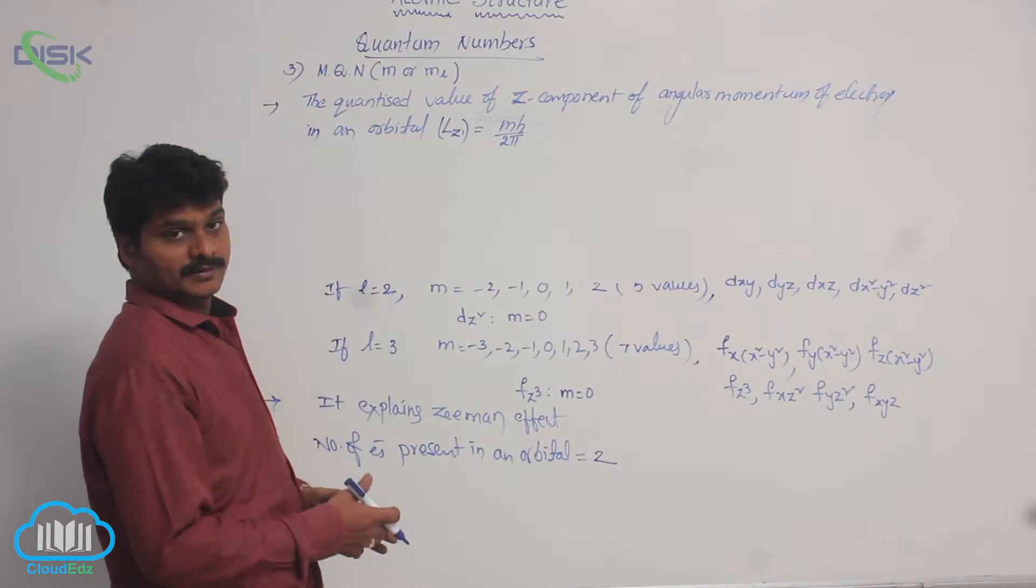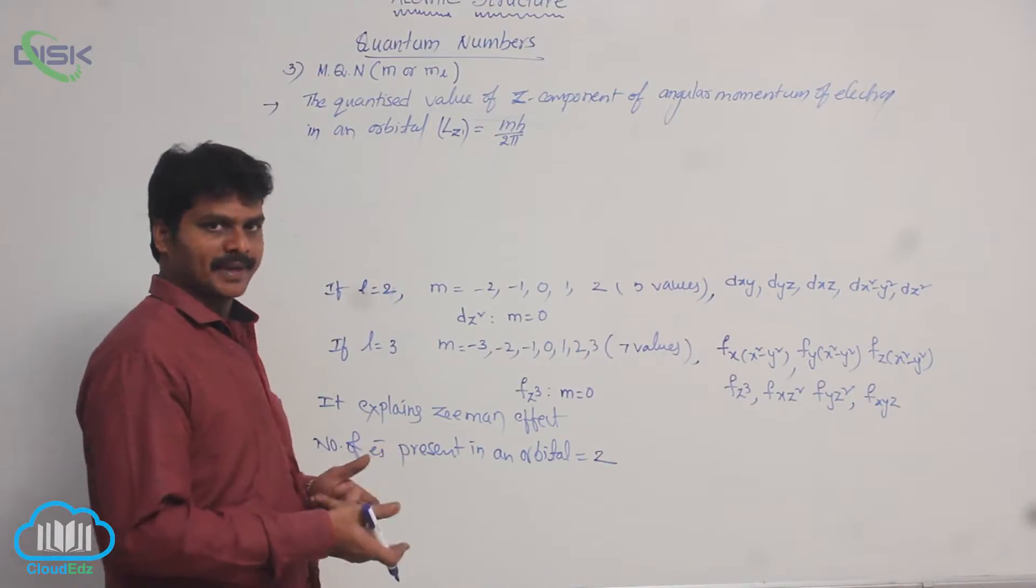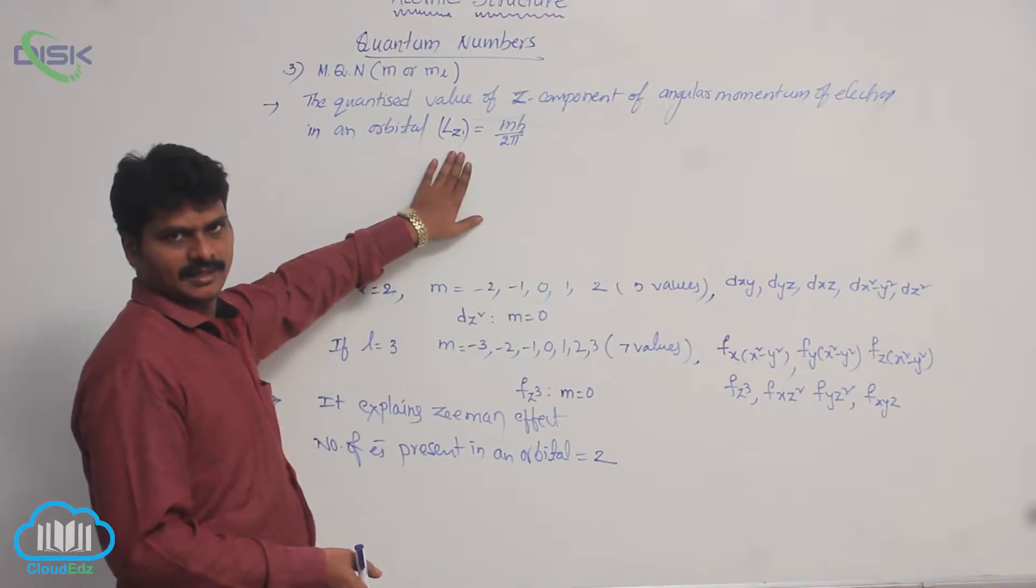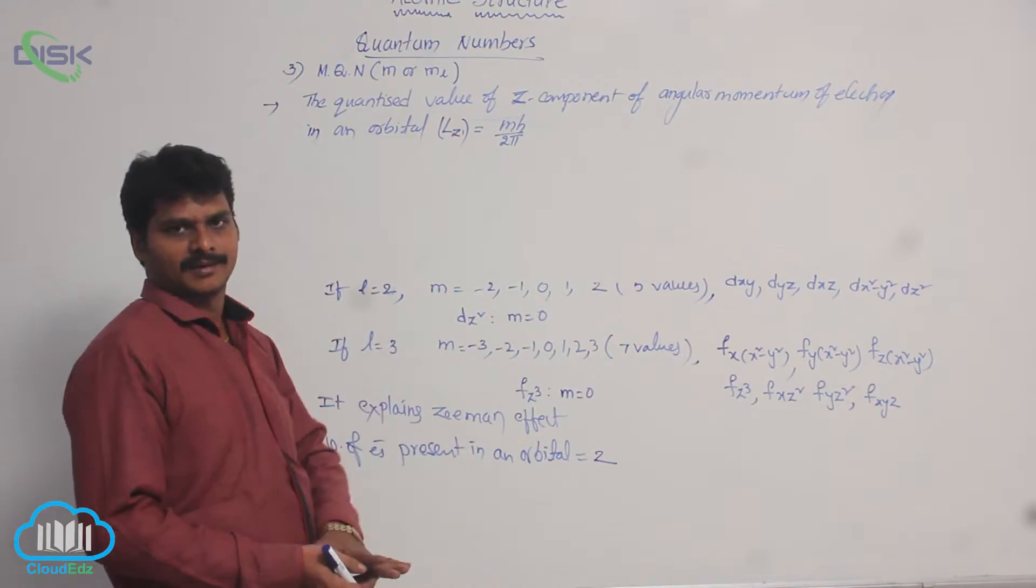So, the quantized value of z component of angular momentum of electron in an orbital is given by the expression Lz equal to m h by 2 pi, where m is magnetic quantum number.